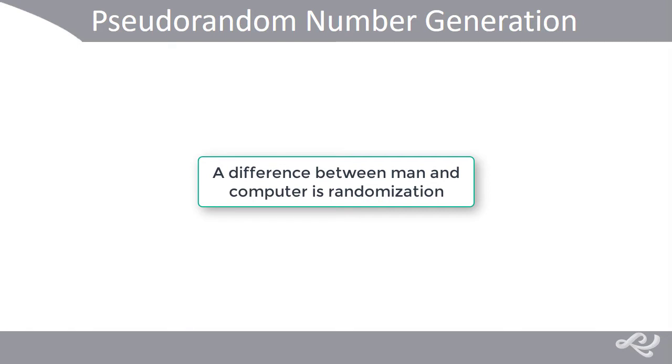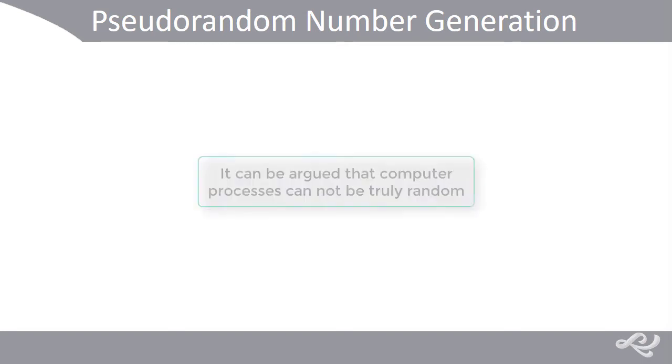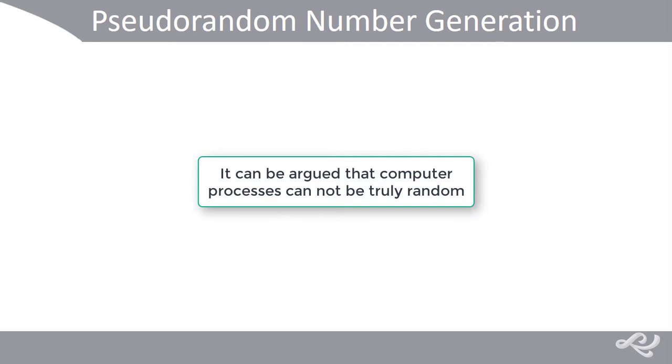Hello, Dave Prowse here with a quick video about pseudorandom number generation. One of the differences between man and computer is randomization, or to put it more accurately, the way that randomization occurs. In the computing world, it can be argued that nothing is truly random, and instead sequences of numbers required by games and encryption techniques are generated in a pseudorandom fashion.